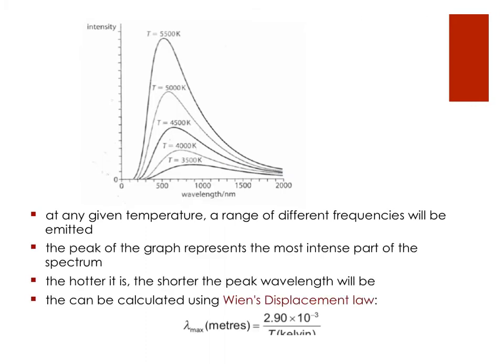And we can use Wien's law to actually calculate the peak wavelength. Notice the temperature has to be in Kelvin. This is one of those equations that usually gets referred to by name.